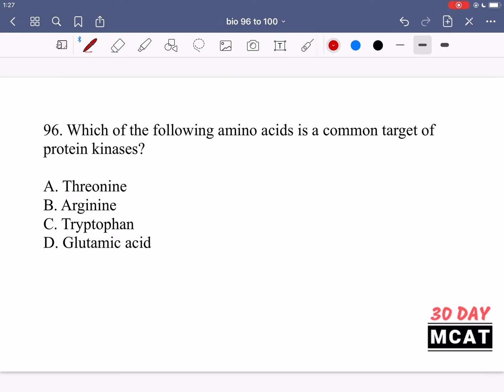In question 96 we're asked which of the following amino acids is a common target of protein kinases. For this you need to know what protein kinases do and which of these amino acids is a common target. Keep in mind we're saying common target. There are two that could be potential targets but the one that's most common out of the options given is the one you want to choose.